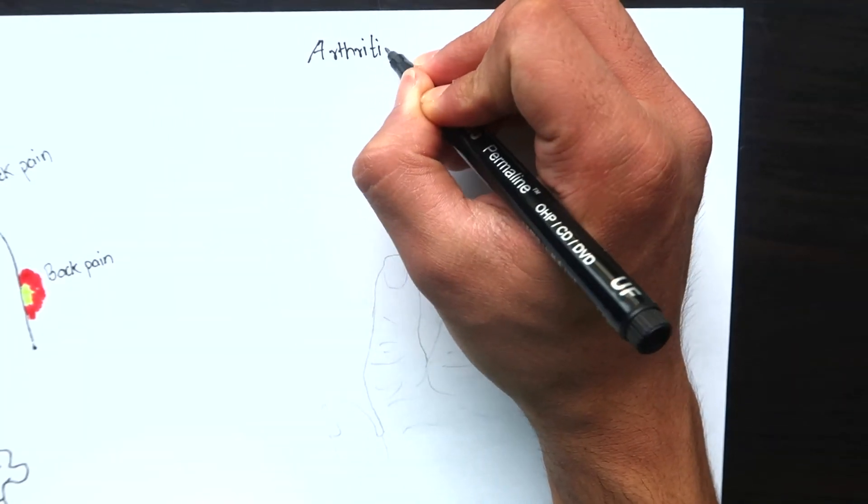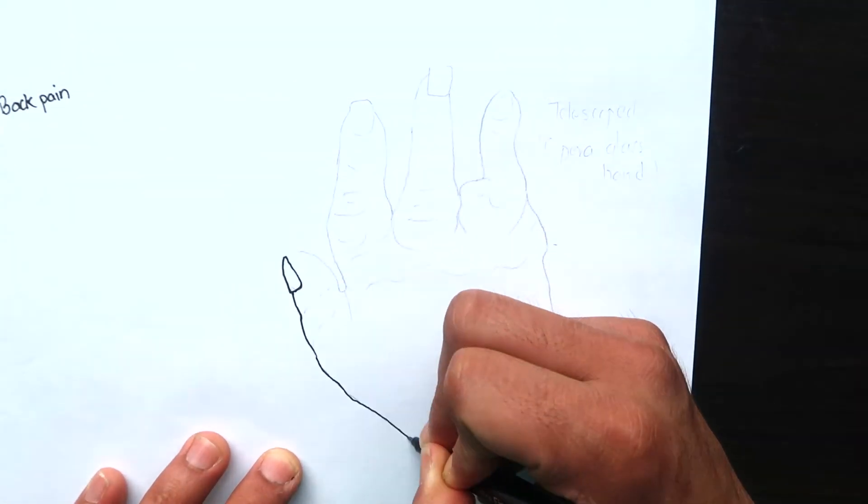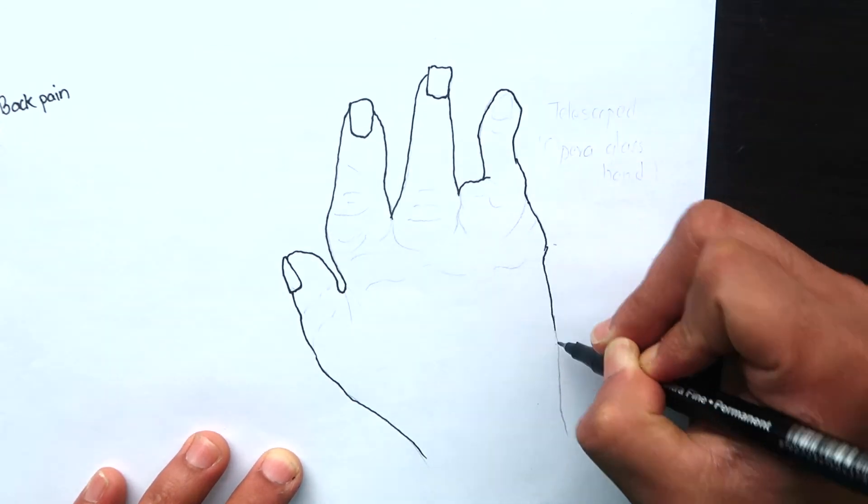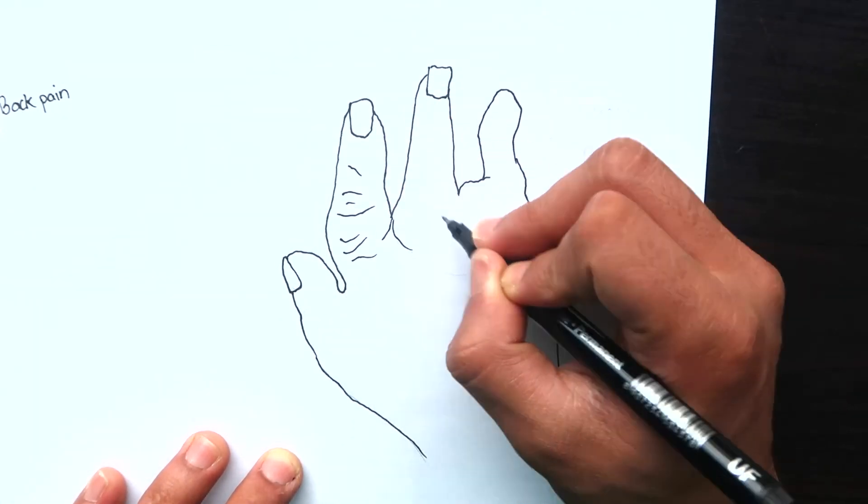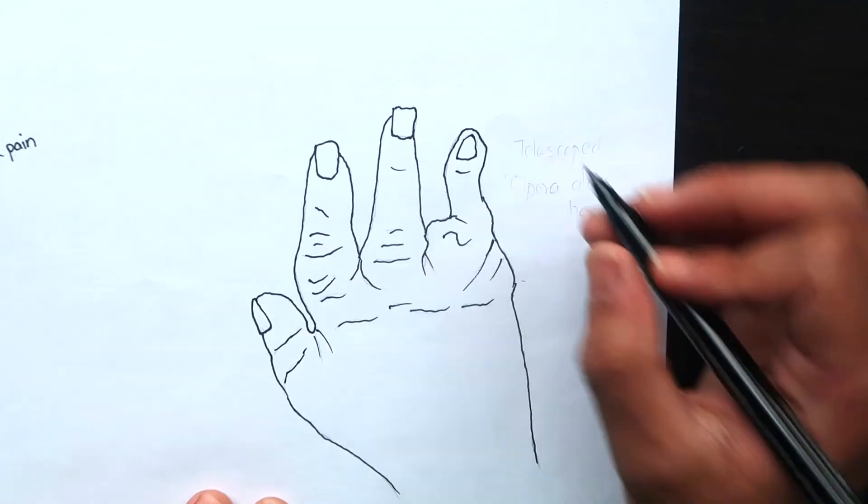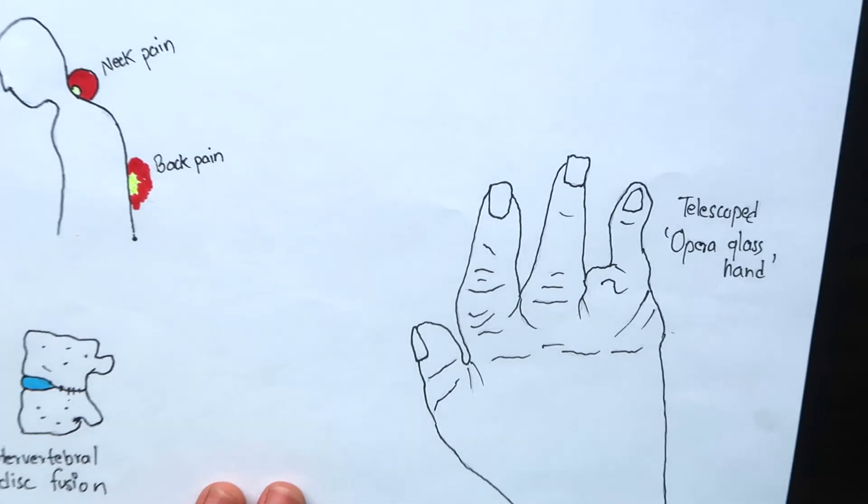And the last is arthritis mutilans. This is a deforming erosive arthritis targeting fingers and toes. It occurs in 5% of cases of psoriatic arthritis. There is prominent destruction of bone and cartilage. The outer skin appears invaginated and telescoped, sometimes also called opera glass hand. The finger can be pulled back to its original length.